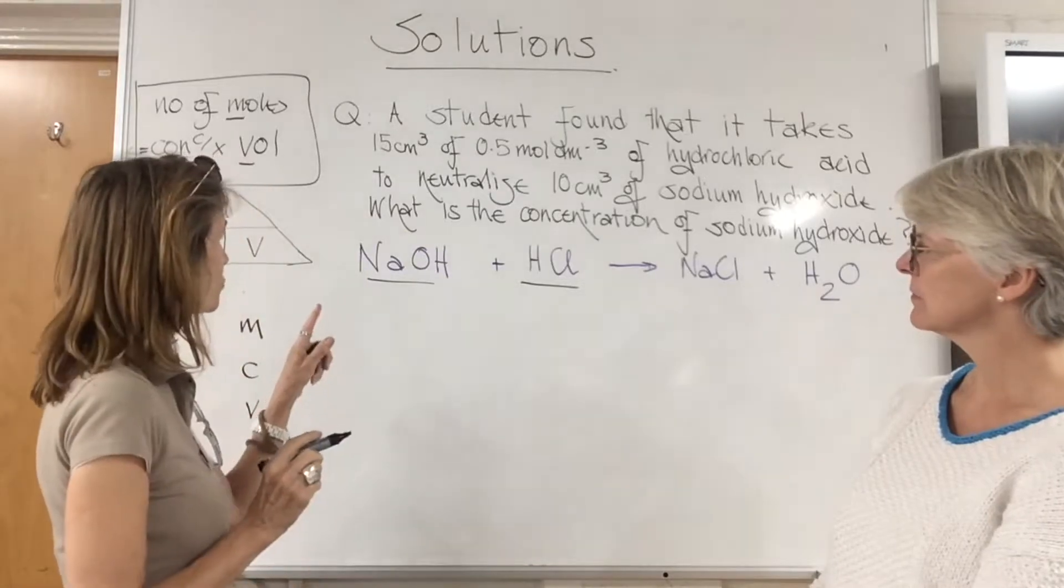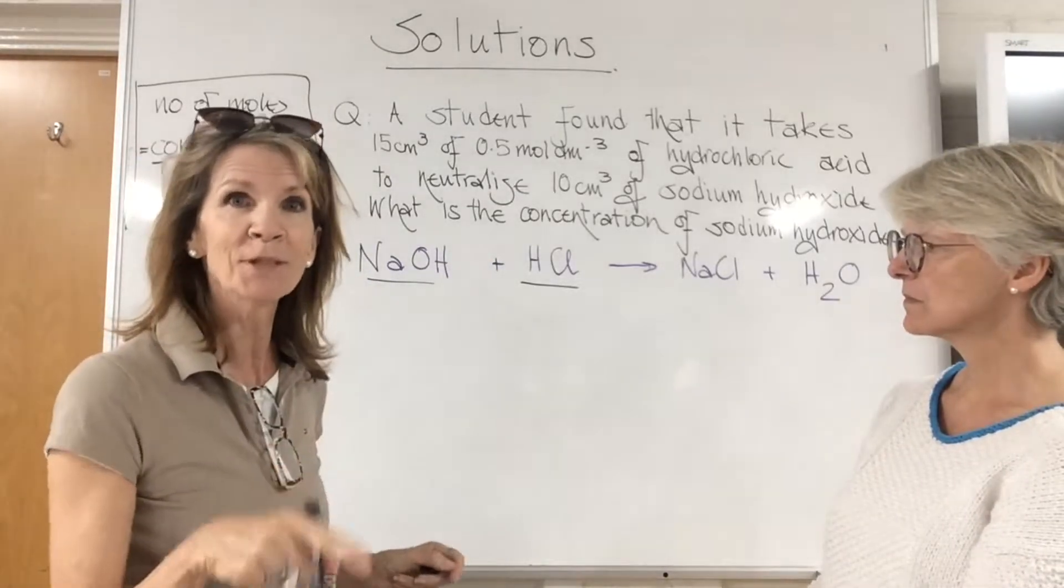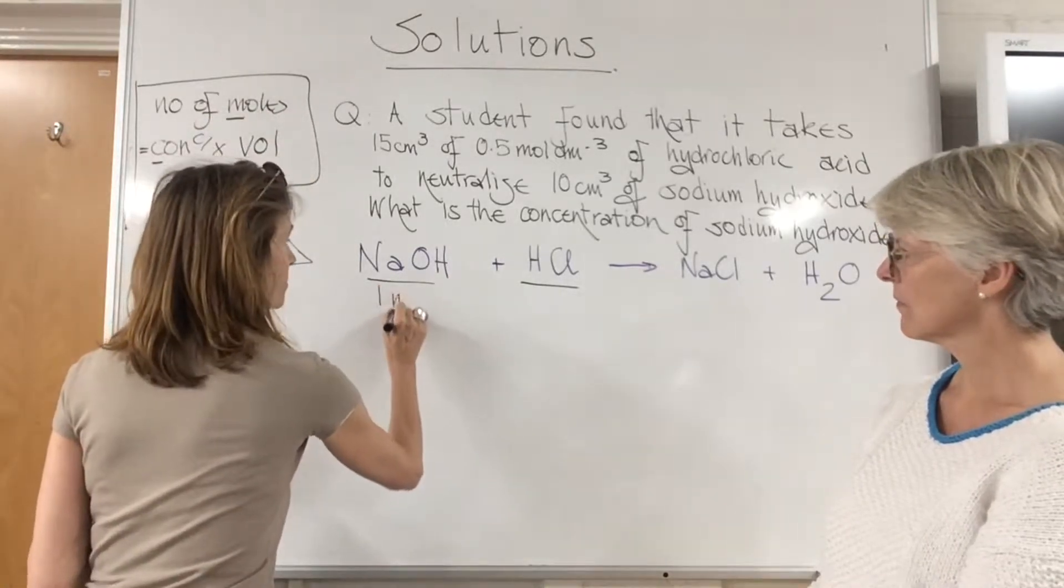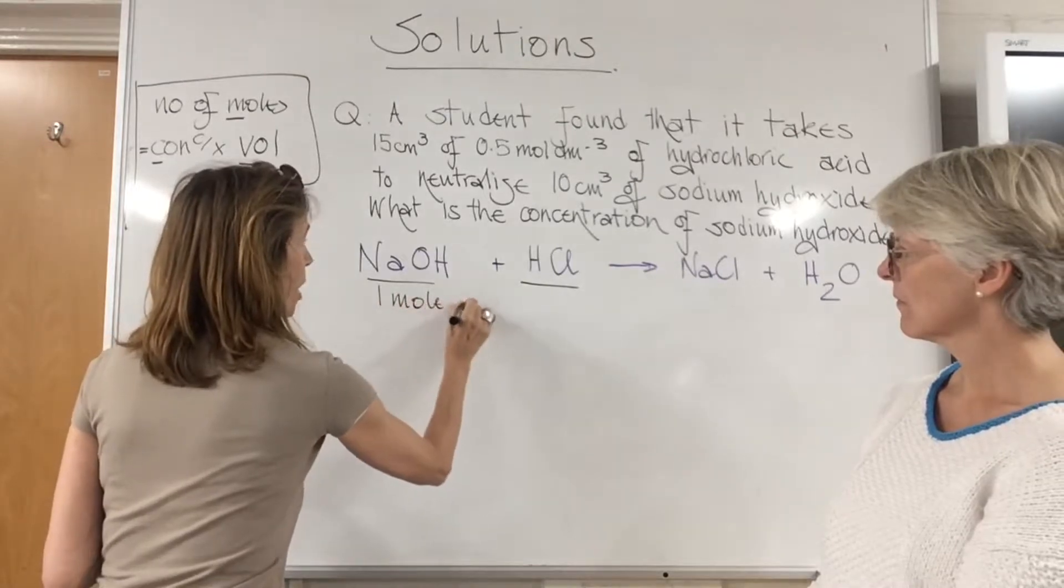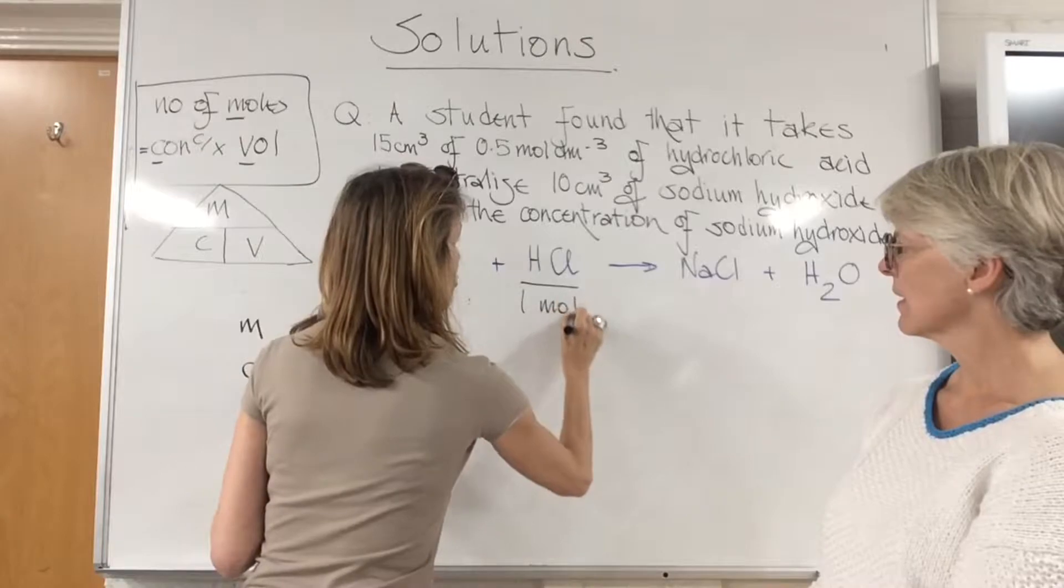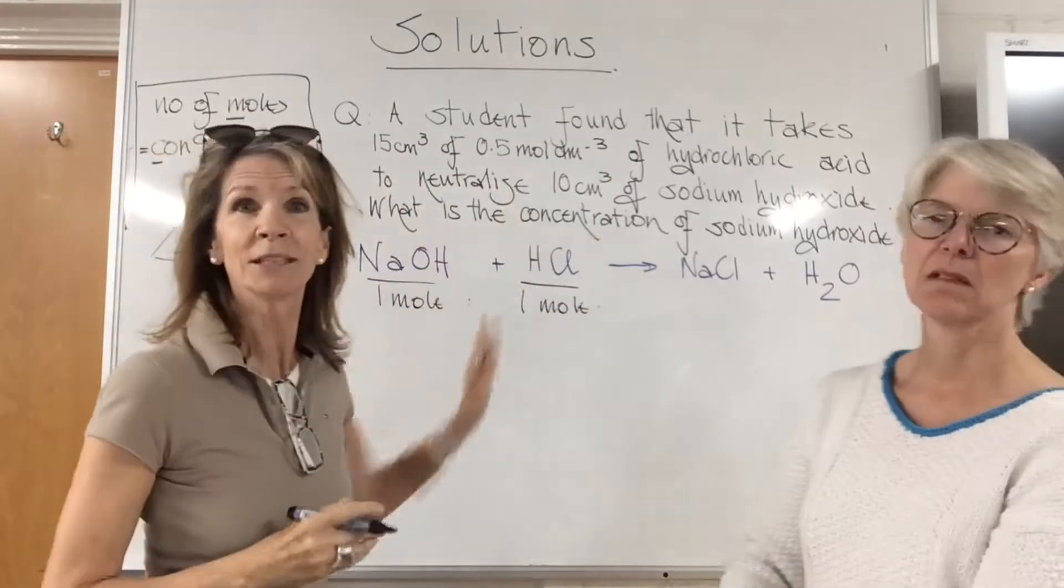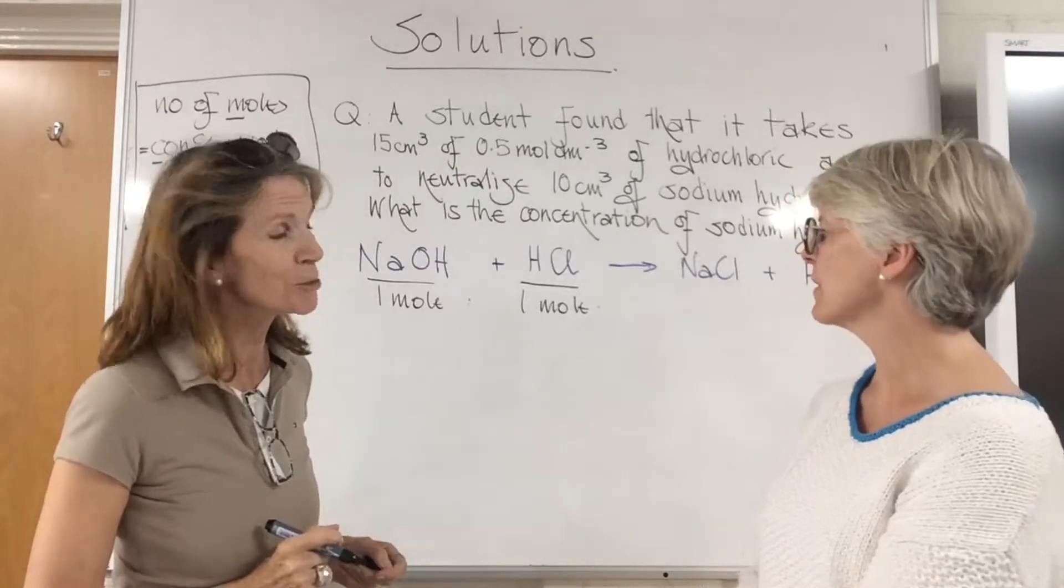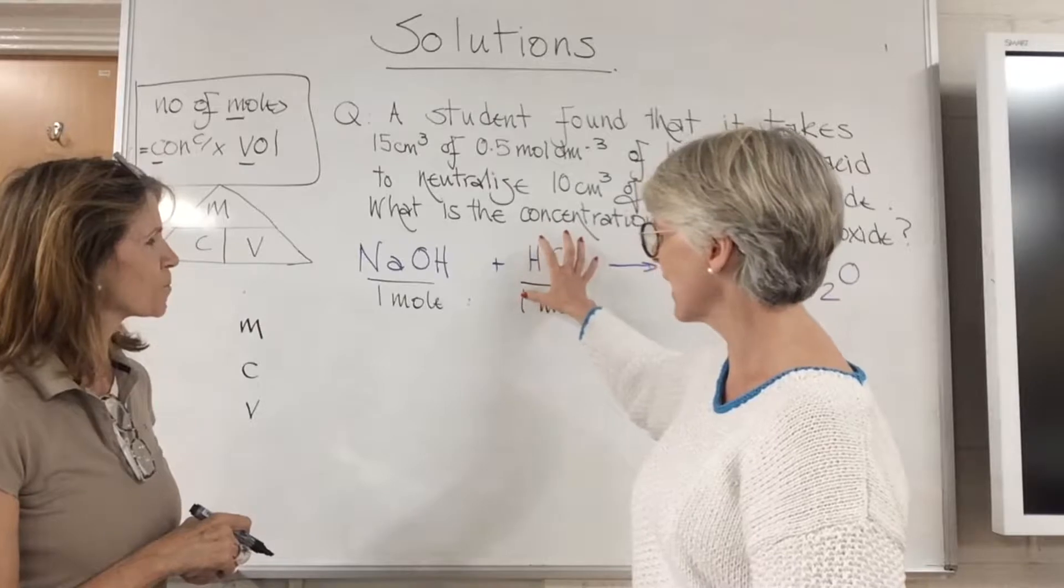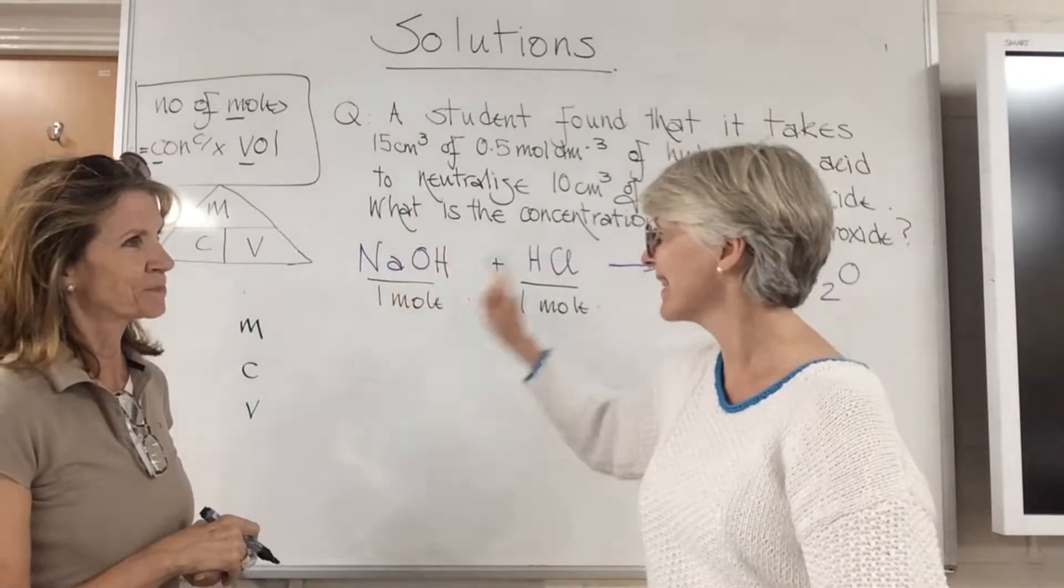We have a ratio of one to one, and because there's no numbers you know it's one. So I can now say we have one mole to neutralize one mole. We're ignoring the sodium chloride because that's not included in the question. We now know that the same number of moles of hydrochloric acid will neutralize the same number of moles of sodium hydroxide.